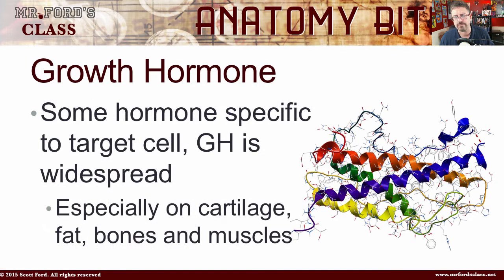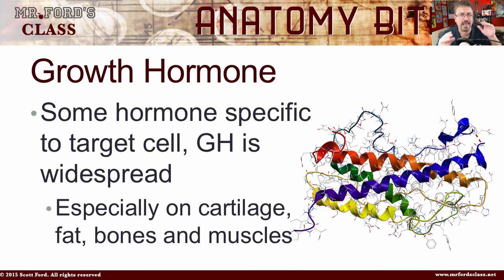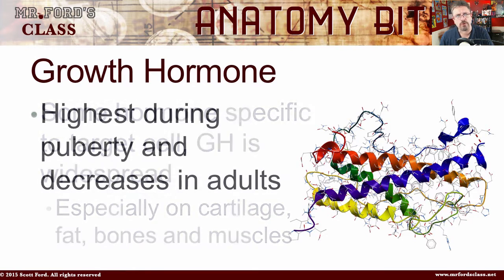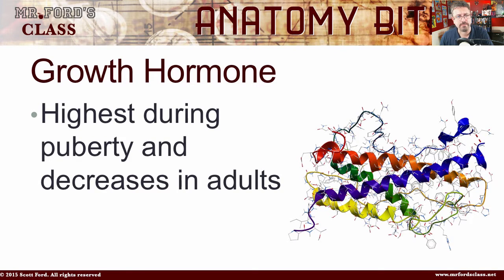Some hormones in the body are very specific to target cells, designed to work on a specific target. Growth hormone has an effect pretty much all throughout the body — a very widespread effect — especially when looking at cartilage, fat, bone, and muscle. Growth hormone is highest during puberty and decreases as you get older.